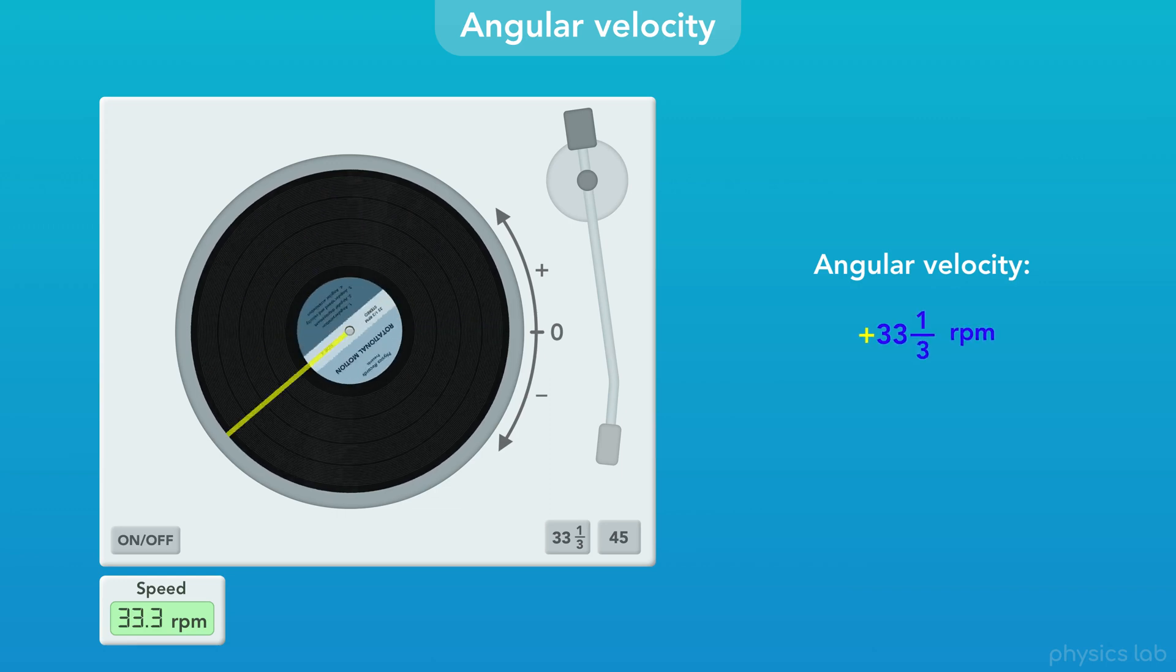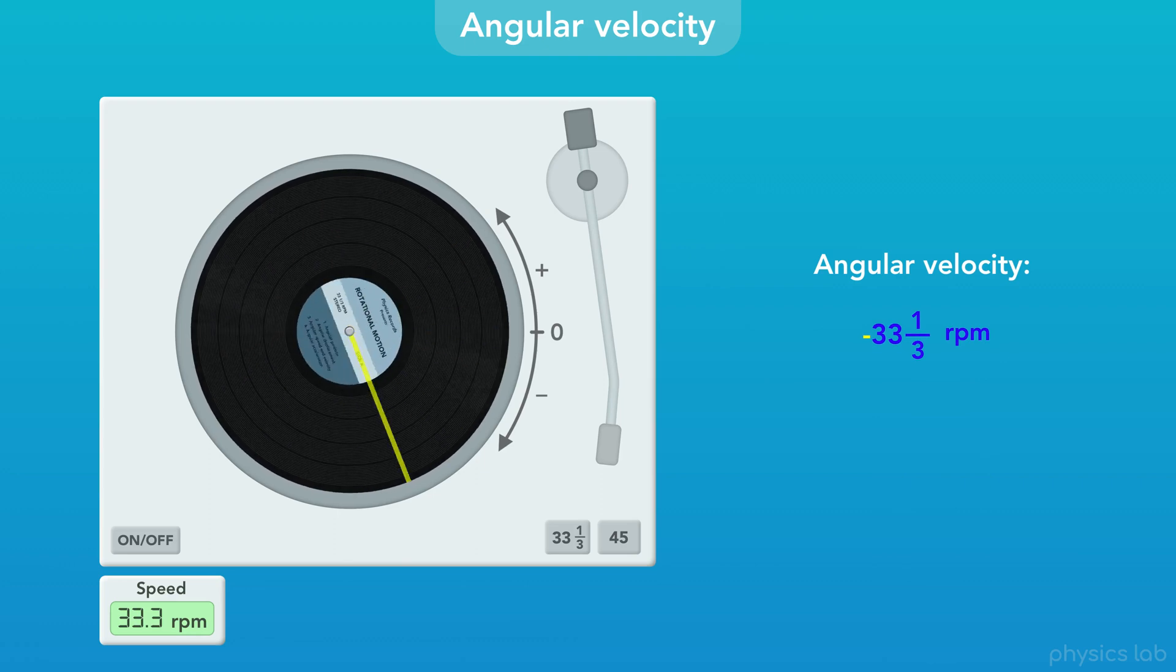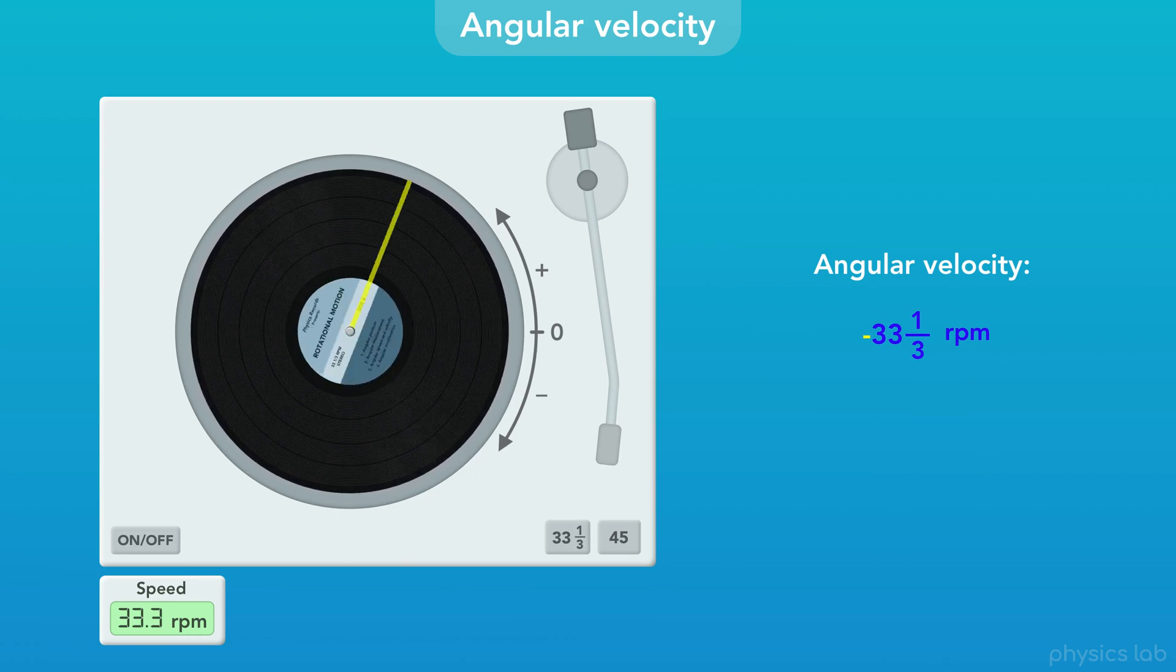So here, the record has an angular velocity of positive 33 and a third RPM. And here, its angular velocity is negative 33 and a third RPM, which is the direction records actually spin while they're playing.